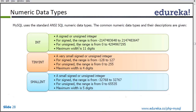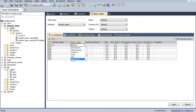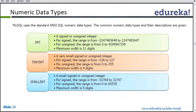Next we have small INT. A small INT is a value that is between INT and tiny INT. It can range from minus 32,768 to 32,767 — this is for the signed value. We can also have unsigned small INT, which ranges from 0 to 65,535. Its maximum number of digits is 5, so the value cannot exceed more than 5 digits; the maximum it can be is 65,535.